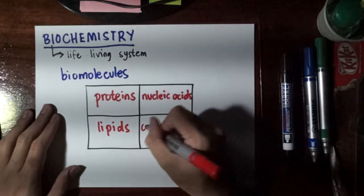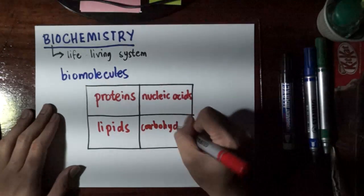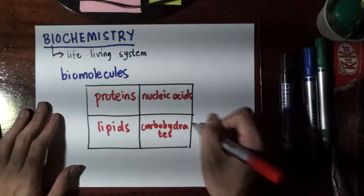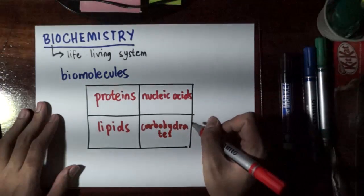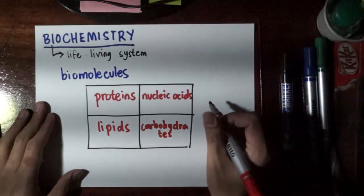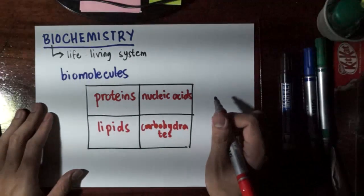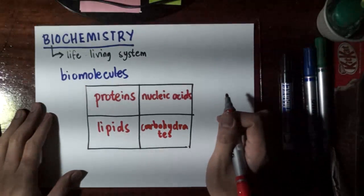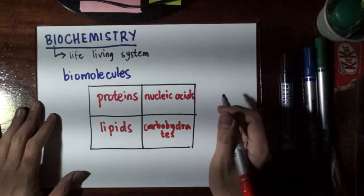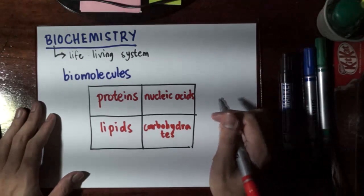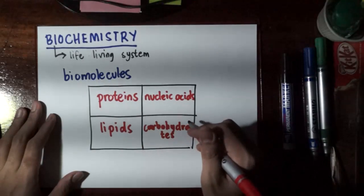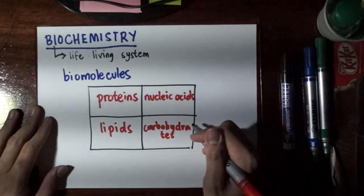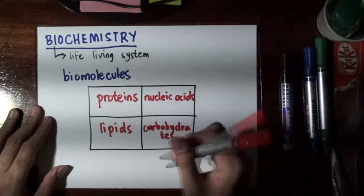And finally, we have carbohydrates. Other than the fact that people who want to lose weight keep away from carbohydrates, it's also important to note that carbohydrates are very essential in such a way that they are the primary energy source of our bodies. And of course, if we do not have energy, we die. So we need to get these carbohydrates so that we would continue to live. But other than that, there are also other functions of carbohydrates besides being just sources of energy.